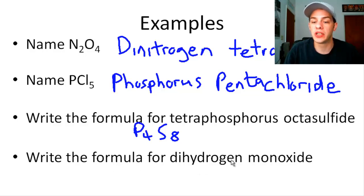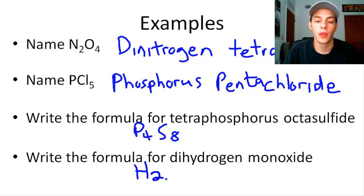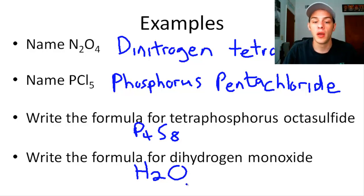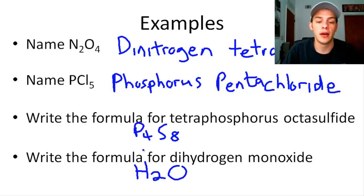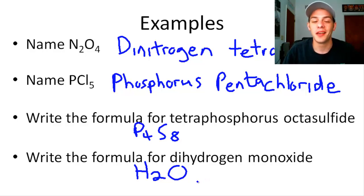Let's write the formula for dihydrogen monoxide. Dihydrogen tells us there are two hydrogen atoms — H2. Monoxide tells us there is one oxygen atom. So this is H2O. Of course we all know H2O by a different name, but if you wanted to name it systematically, that's how you'd do it. There are actually websites petitioning people to ban dihydrogen monoxide — it sounds deadly, sort of like carbon monoxide — but in reality it's just water.